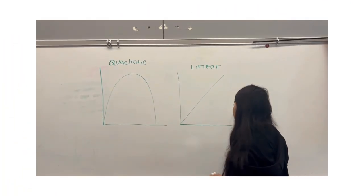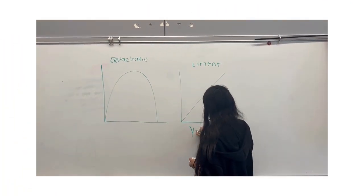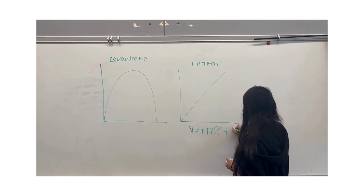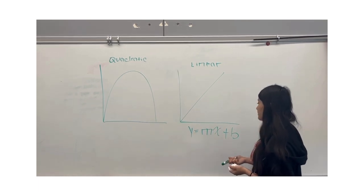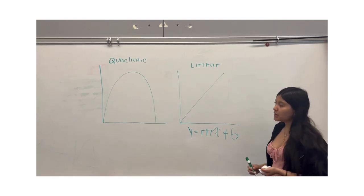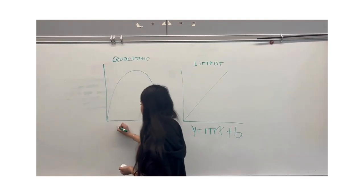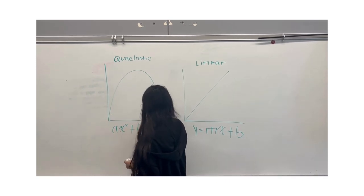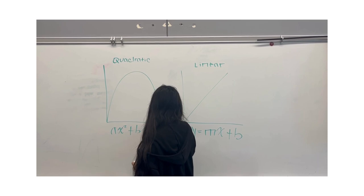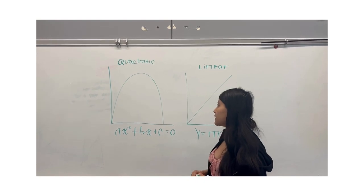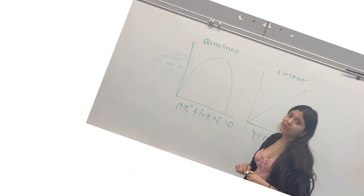For linear, you'd use the equation y equals mx plus b to find — which is your slope formula. Your m is your slope and your b is your starting point. And then for quadratic, you use ax squared plus bx plus c equals zero. It's a polynomial to the second degree.